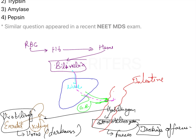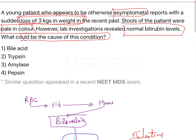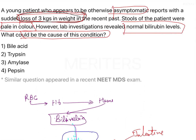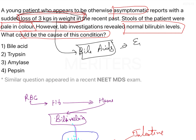If there is a problem — for example, stercobilinogen is less — there will be pale stools due to lack of stercobilinogen. The main focus should also be on the loss of 3 kg in weight. Bile acids are responsible for emulsification of fat, which leads to digestion of fat — that is a clue, because there is loss of 3 kg of weight.